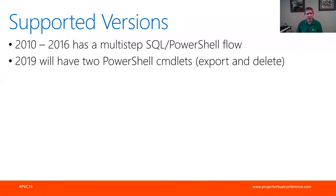For Project Server, supported versions are 2010 right through to 2016. There was actually an update for 2010 that went out in May containing the new XML capabilities, so that's something to be aware of. They have multi-step SQL and PowerShell flows to get the data out in a very similar set of data to what I've already shown you with Project Online. Project Server 2019 will just have a couple of PowerShell commandlets - an export commandlet and a delete commandlet - very much in line with Project Online in terms of data structures and architecture.